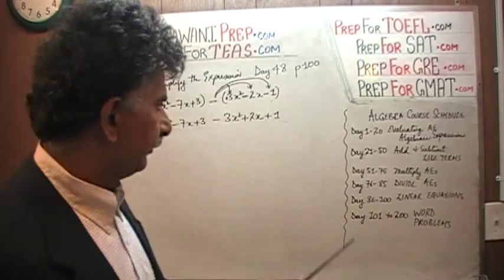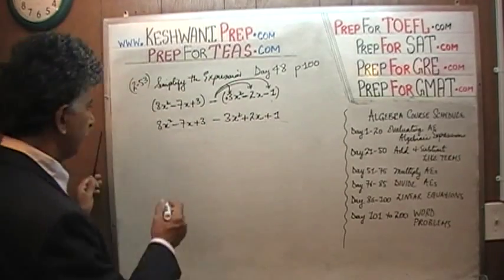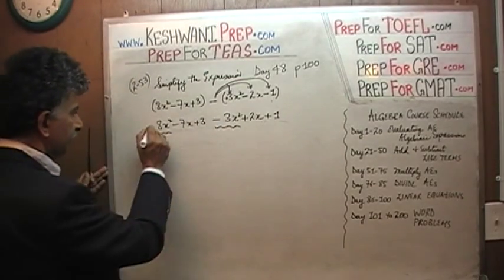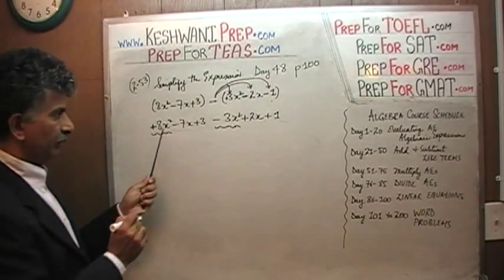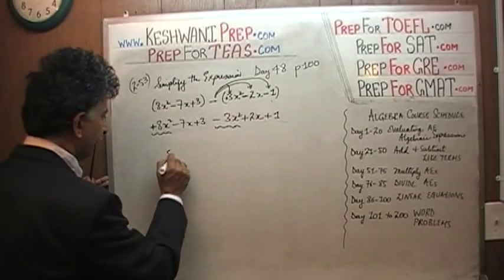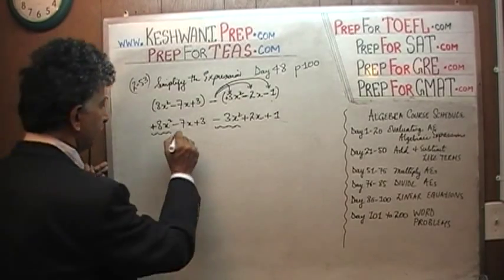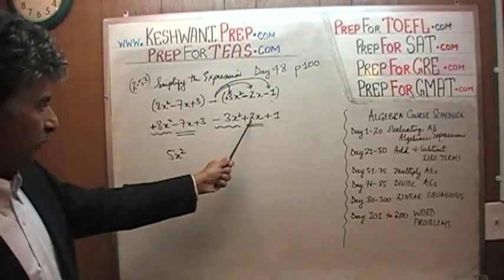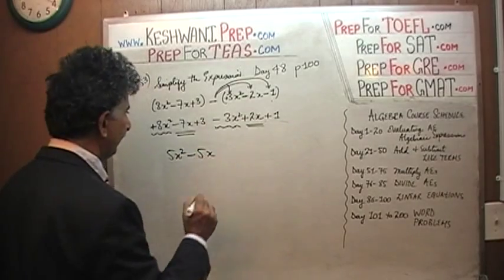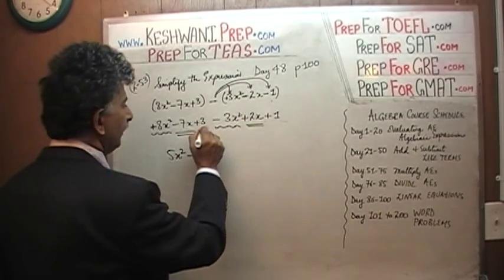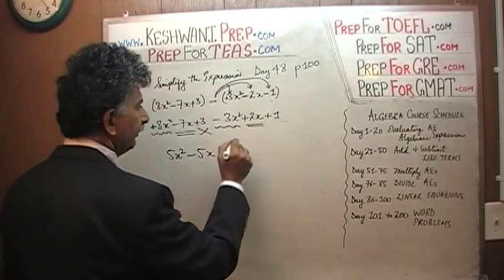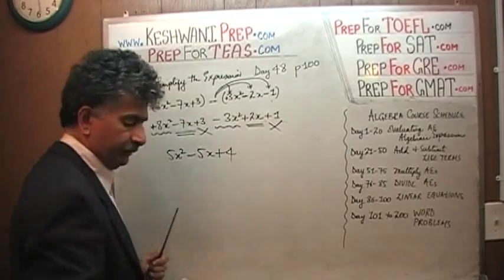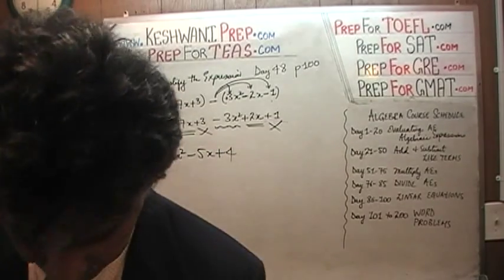Now we do the same thing as before — add and subtract the like terms. We have 8x squared and negative 3x squared: positive 8 and negative 3 is positive 5, so 5x squared. Then we have negative 7x and positive 2x: negative 7 and positive 2 gives us negative 5, so negative 5x. And finally, positive 3 and positive 1 gives us positive 4. The answer is 5x squared minus 5x plus 4 — adding and subtracting like terms.